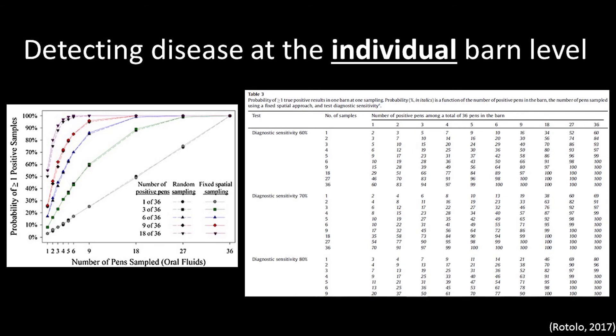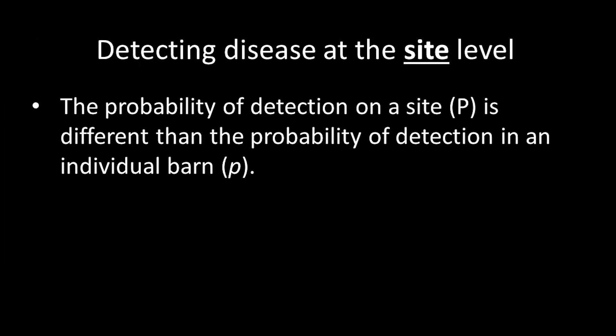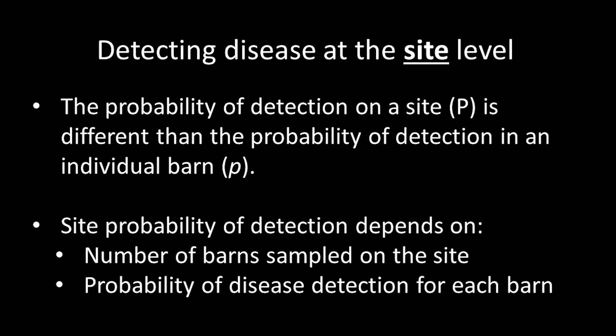However, most commercial swine operations have more than one barn. This is important because the probability of detection on a site increases dramatically with the number of barns sampled. Therefore, it is important to collect samples from every barn even if only a few samples are collected in each barn. There is a simple equation to estimate the probability of detection on a site when more than one barn is sampled.